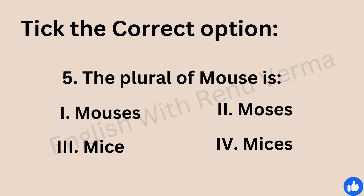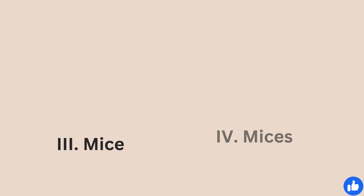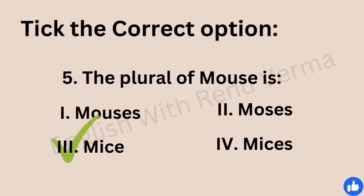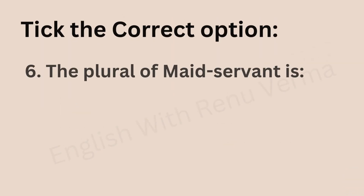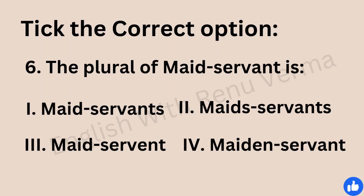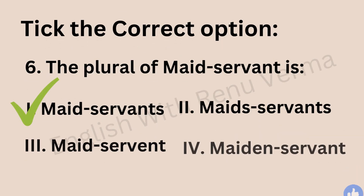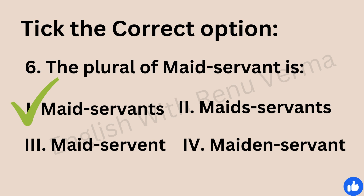The plural of 'mouse' — options are mouses, Moses, mice, or mices. I know you know the answer: it's 'mice'. Next, the plural of 'maid servant'. The options are maid servants, maid servants, maid servant, or maiden servant. The correct answer is 'maid servants'.